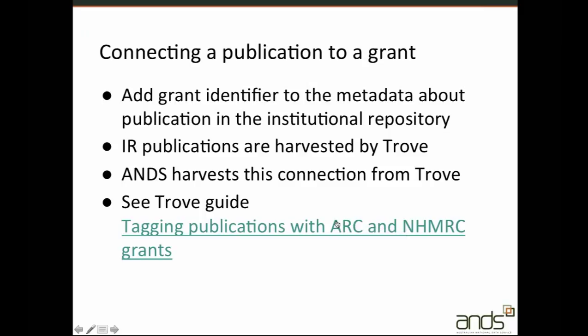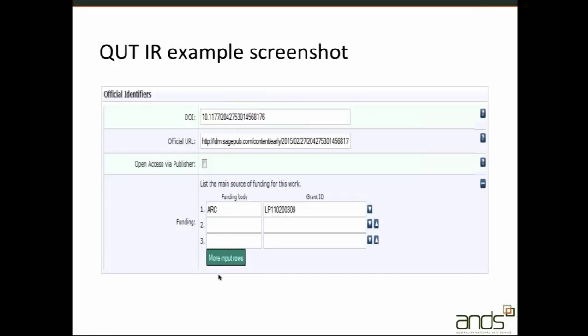The Council of University Libraries has developed guidelines in conjunction with the NHMRC and ARC for tagging open access versions of publications resulting from grants with the PEARL grant identifier. As these research publications are harvested by Trove, ANS is able to harvest that connection from Trove so that we can include publications as well as data collections when viewing a grant in RDA — and there is a Trove guide explaining how to do this. The QUT institutional repository is another example: when submitting or cataloguing a publication, they can put in a funding body from a drop-down list of funders and type the grant ID, and they also plan to use our API to provide a lookup for the grant ID rather than free text.